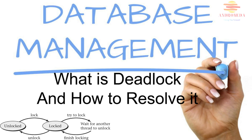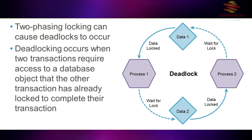The two-phase locking mechanism of Teradata can result in a situation known as a deadlock. Deadlocking occurs when two transactions require access to a database object that the other transaction has already locked for each one to complete whatever it is their transaction needs to do.